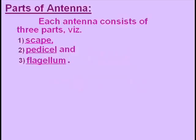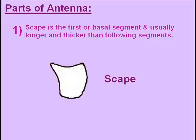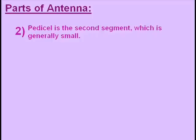Now we will discuss the parts of antenna. Each antenna consists of three parts: first, scape; second, pedicel; and third, flagellum. Scape is the first or basal segment and is usually longer and thicker than the following segments. This picture shows the scape and the arrow is pointing towards it.